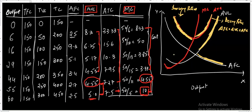To summarize: the average total cost falls initially because both average fixed cost and average variable cost are falling. After that, the average total cost rises because while average fixed cost continues to fall, the average variable cost rises — and the rise in average variable cost is more than the fall in average fixed cost, pushing the average total cost curve upwards. That is why the average total cost curve becomes U-shaped.